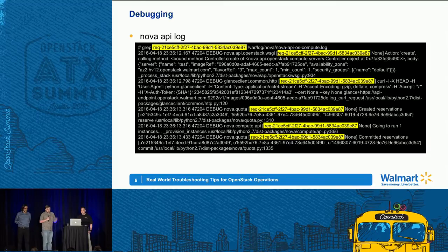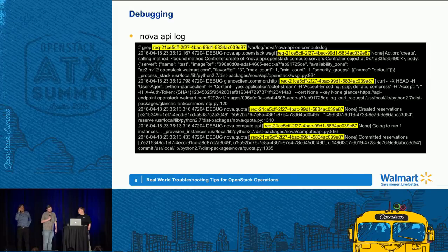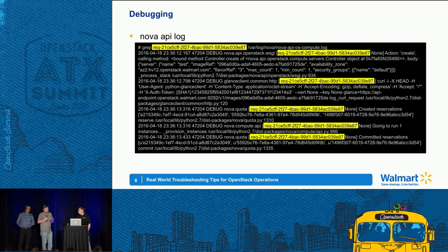Following the boot, on the controller side, this is the Nova API service log. That same request ID — you're seeing the same JSON data that the client was showing you was sent. You're also seeing the request that Nova API made to Glance about the requested image for your VM, and then some messaging between the Nova services. Especially starting out, the most critical advice I could give you is learn how OpenStack works underneath — what services talk to which other services — and see where it's falling apart if it is.